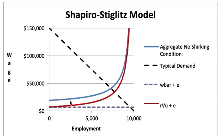This blue curve is from the previous Excel homework and is the aggregate no-shirking condition. This downward-sloping curve is supposed to represent the market demand for labor. What is different is this horizontal line at height w-bar plus e, which we haven't done before, and this red curve. I want you to think about the red curve as actually being the supply curve — but that's what I want to explain.